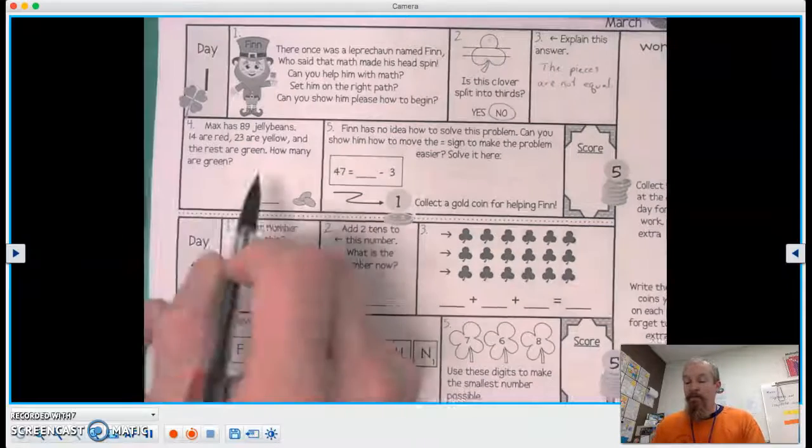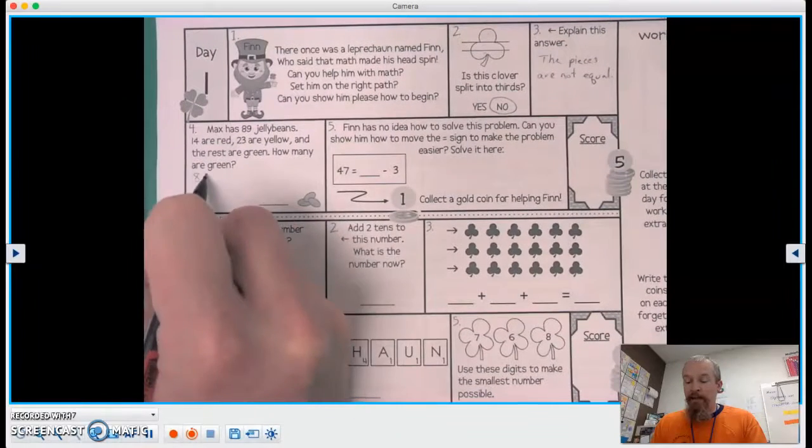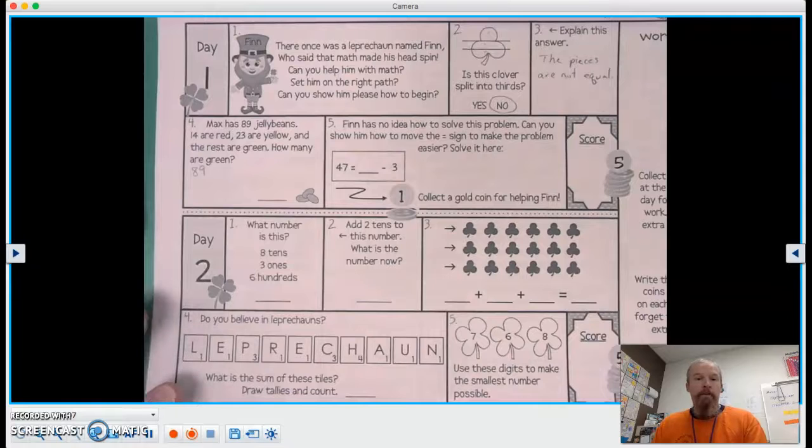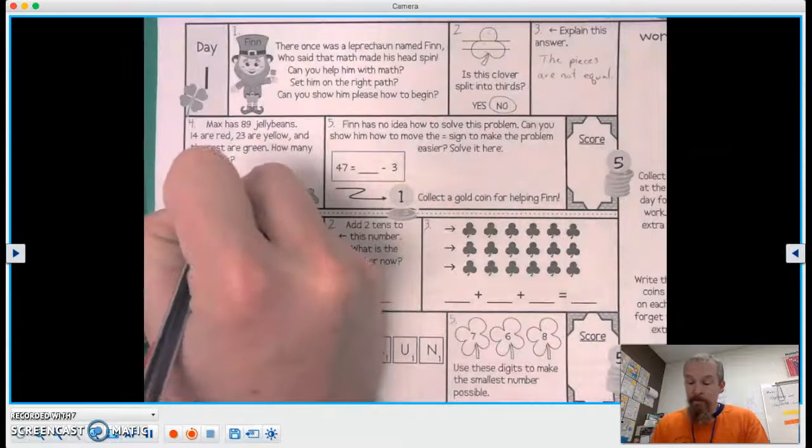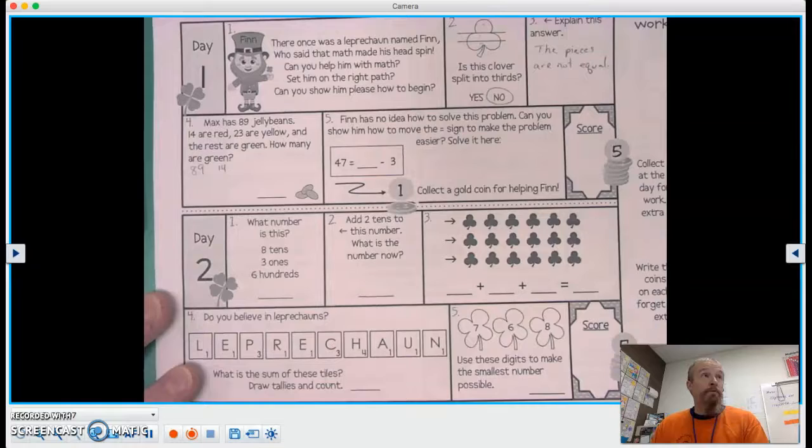Okay, so we have a total of 89, right? So 89 is our big number. Now, some of them are red. So 14 are red, and 23 are yellow.